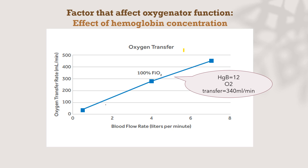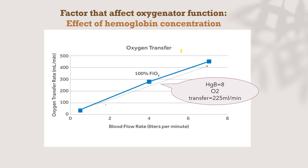Regarding hemoglobin concentration: from this curve, if the patient has a hemoglobin of 12 g/dL, FiO2 100%, and inlet SpO2 of 75%, the oxygen transfer will be 340 mL per minute. But if hemoglobin drops to 8 g/dL with the same flow and same FiO2, the oxygen transfer drops to 225 mL per minute. Hemoglobin plays a very important role in arterial oxygen content through the equation: hemoglobin × 1.34 × SpO2. So hemoglobin is a very important component in oxygen content and oxygen transfer.